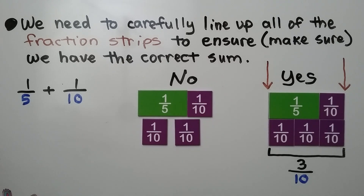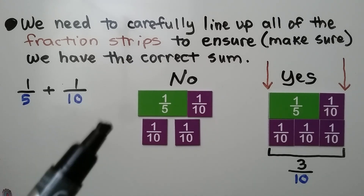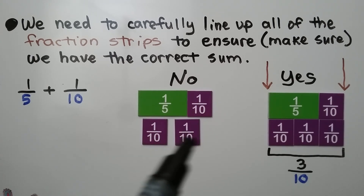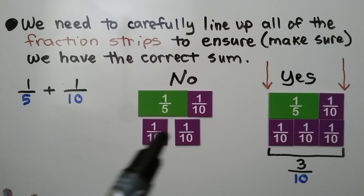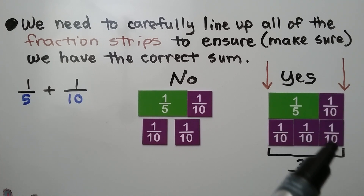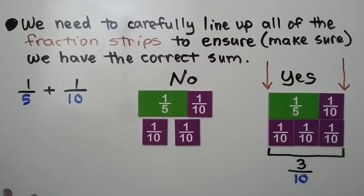We have 1 fifth plus 1 tenth. These addend strips are correct — right next to each other — but the fraction strips we use to find the sum are not correct; they're open and apart from each other. This is the correct way: we want the edges to line up so they're equal to each other. We can see 1 fifth plus 1 tenth is equal to 3 tenths.